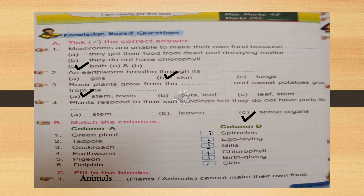Second one — tadpole. Tadpole uses gills for breathing. The tadpole is the young one of a frog. They use gills for breathing in the water. After they grow, when on land they breathe through lungs and skin, and when in water through lungs and skin also. So tadpoles use gills — write 2 near gills.